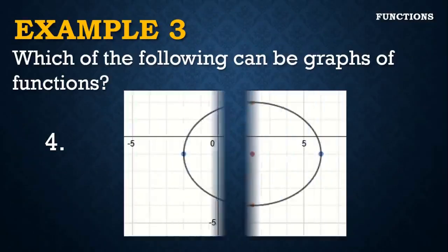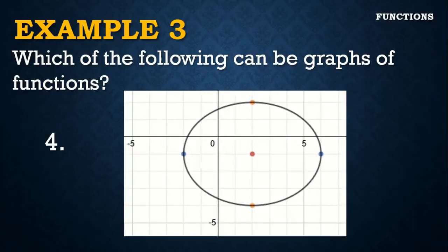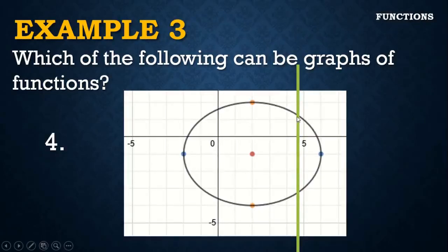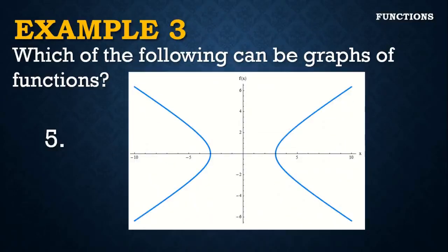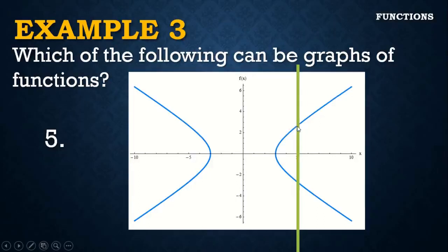How about an ellipse? When we pass a vertical line, it hits two points on the ellipse. Therefore, this graph is not a graph of a function, because the vertical line intersects two points on the graph. The last example is a hyperbola — passing a vertical line intersects two points on the graph as well. Therefore, a hyperbola is not a function.